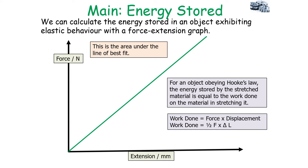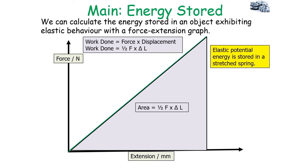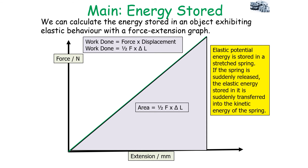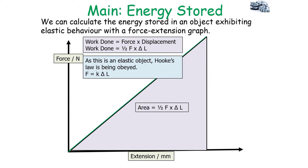This is the area under the line of best fit, which forms a triangle with equation ½ × base × height — that is, ½ × force × extension ΔL. The elastic potential energy is stored in a stretched spring. If the spring is suddenly released, this elastic energy is transferred into the kinetic energy of the spring, meaning the work done on the spring is stored as elastic potential energy, confirming the object is acting elastically and Hooke's Law is being obeyed.